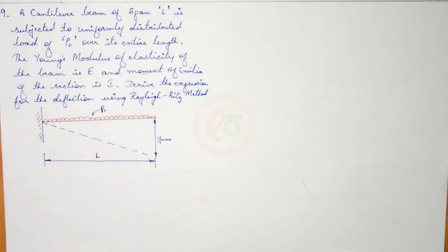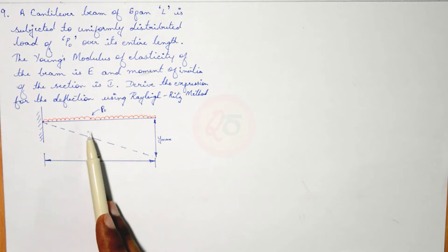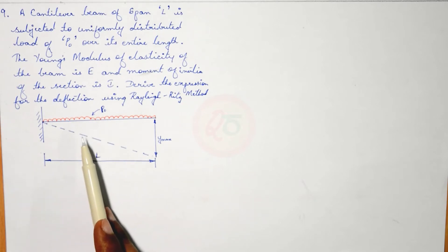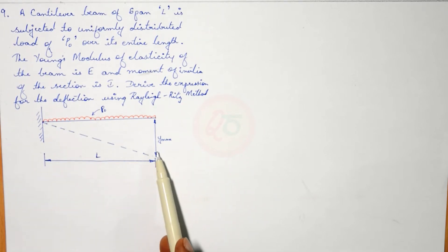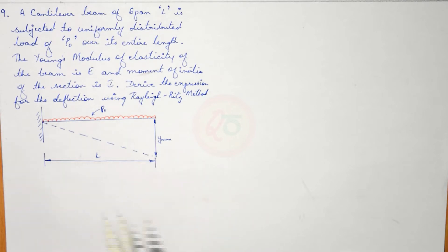Hello everyone. Greetings from Quest 0. In today's session, we will look into a cantilever beam which is subjected to a uniformly distributed load P0, and we are trying to find out the maximum deflection that occurs at the free end using the Rayleigh-Ritz method.